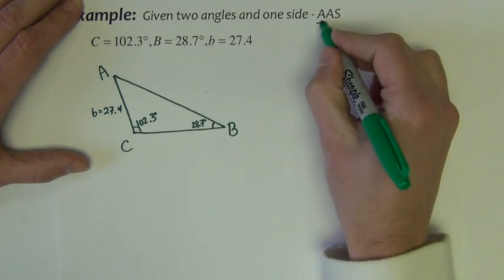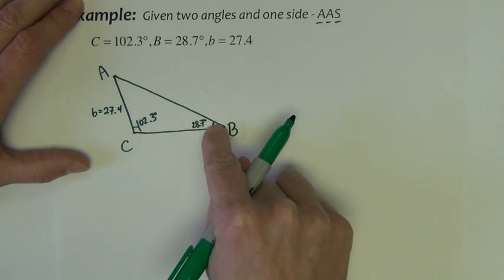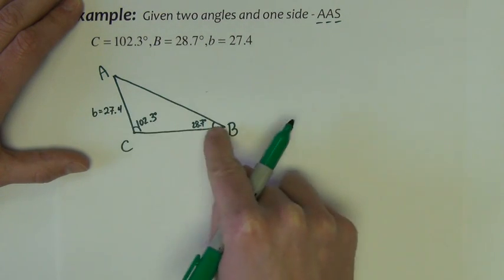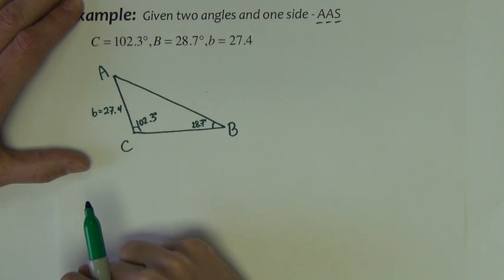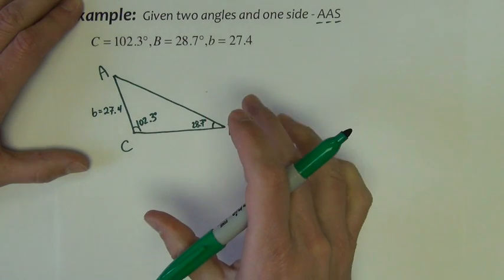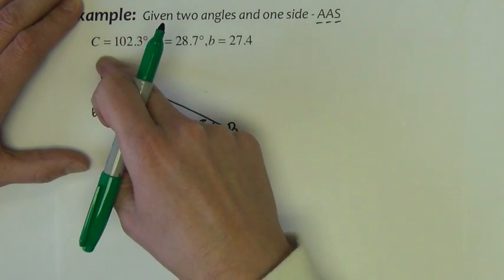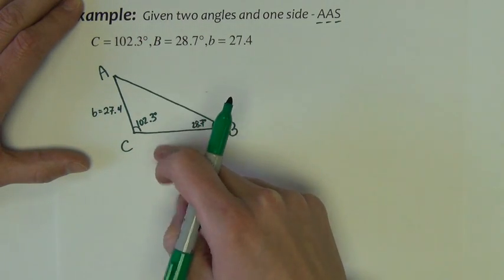So by saying we have angle, angle, side, we have angle, angle, side, kind of consecutively going around the triangle. So to solve this triangle, we need to find the other angle and the other two sides.